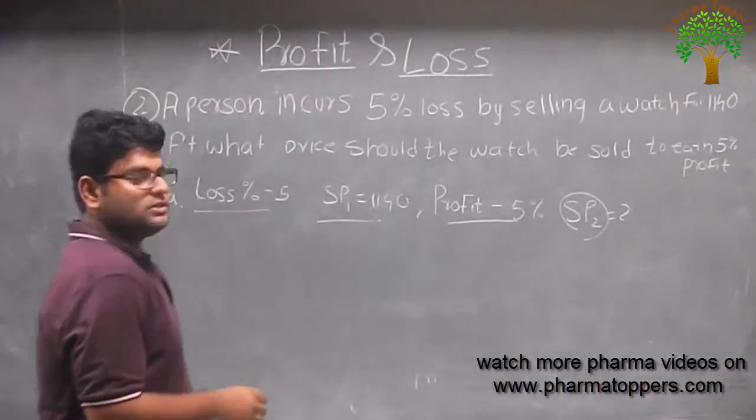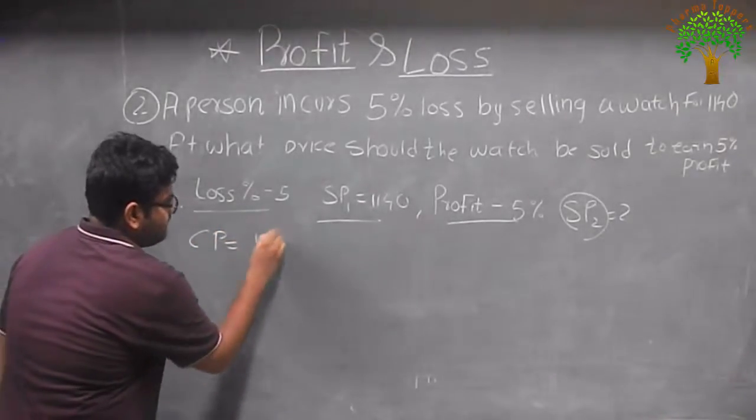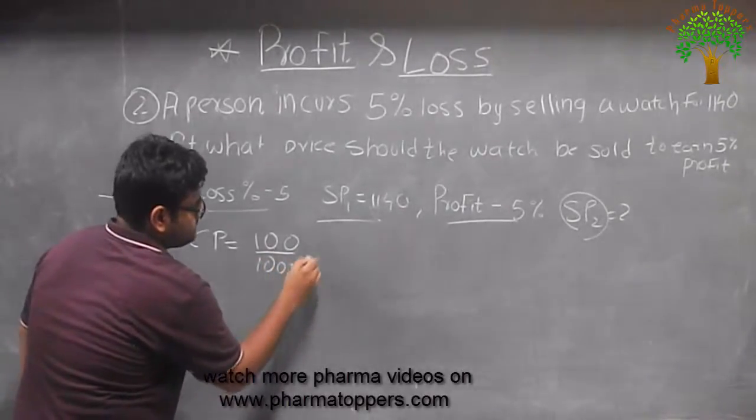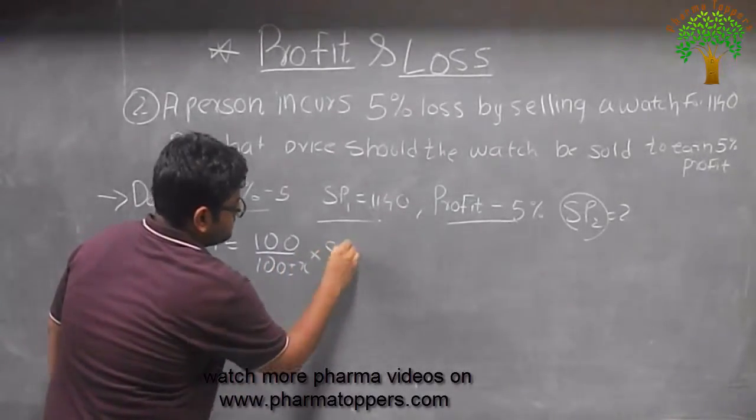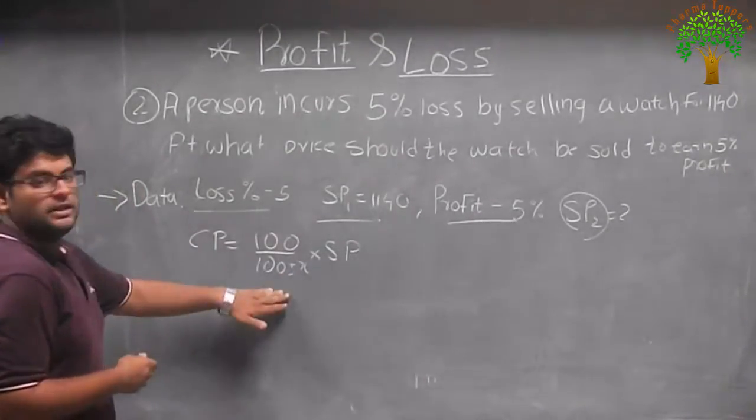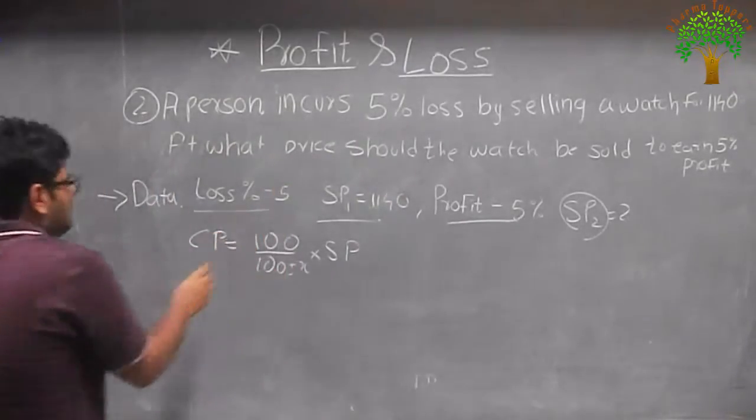For this we have a formula like CP is equal to 100 upon 100 plus minus x into the selling price. So it's like the x plus minus, the plus when it's a gain or a profit, minus when it's a loss. So using this formula we can get two equations.